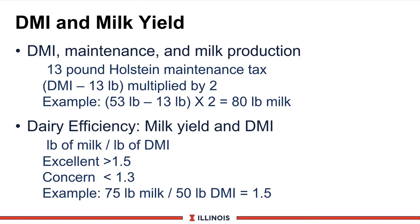Another useful term is dairy efficiency — simply taking the milk yield and dividing it by dry matter intake. This is similar to what hog, beef, and poultry people do to see how effectively they convert feed into a finished product. An excellent value is something over 1.5, and I would be concerned if that value drops below 1.3. In the field, these numbers run from 1.1 to 1.7. For example, if I had 75 pounds of milk with a 3.5% butterfat test and cows eating 50 pounds of dry matter, that value is 1.5 — a very good value.